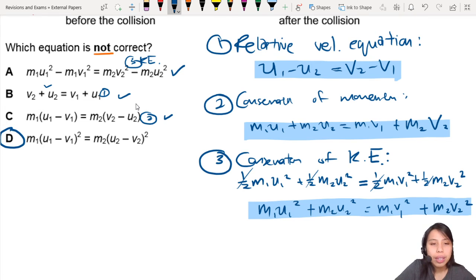If you see the squares, that means it's talking about the KE equation, which is the number three. Yes, conservation of kinetic energy, which is the one down there. So what is wrong with this one? Well, M1U... Whoa, hang on a second.